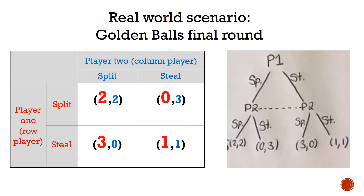Steal is also strictly dominant for player 2 for the same reasons. This means steal is a strictly dominant move for both players, and therefore steal-steal is the Nash Equilibrium, even though it is not a Pareto efficient outcome, since neither player gets any of the jackpot.